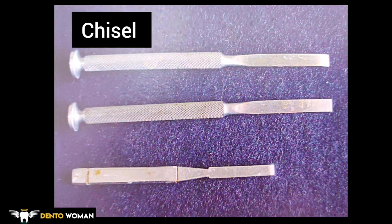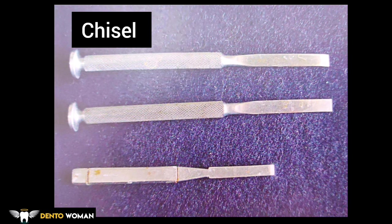Chisel — an instrument used for cutting bone with a mallet. The handle is cylindrical and serrated with a flat end to be struck with the mallet. The blade is flat and rectangular; the cutting edge may be available in different sizes. The cutting edge has a single bevel, unlike the osteotome which was bi-beveled.